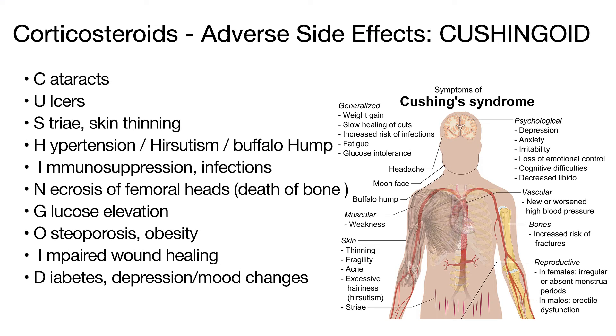Corticosteroids are a class of steroid hormones used to suppress an overactive and unwanted immune response, decreasing swelling, redness, itching, and allergic reactions. However, they also have side effects that can be very serious, typically presenting as drug-induced Cushing syndrome.